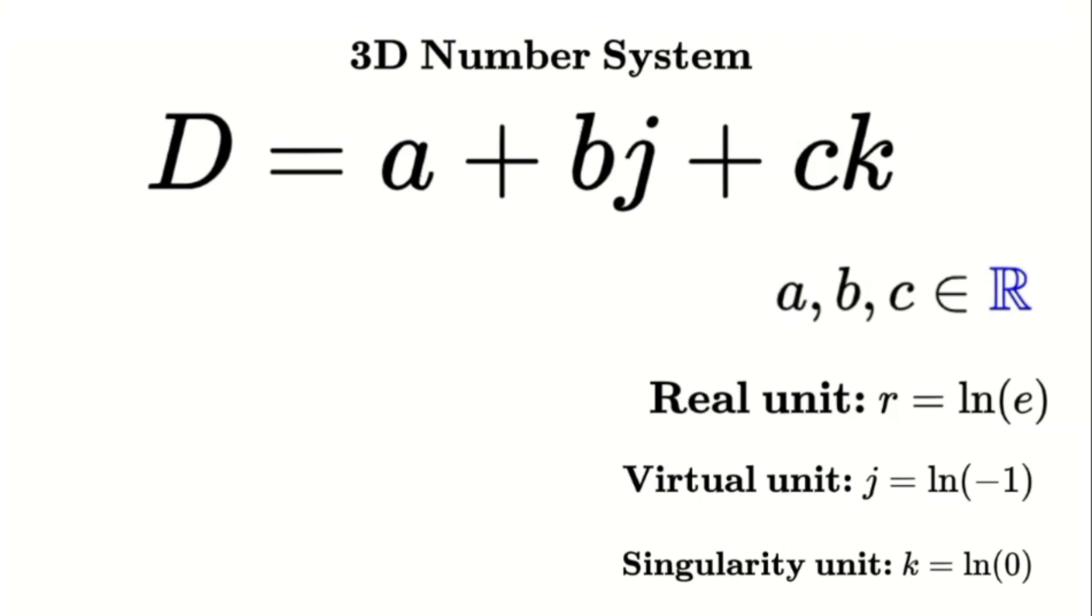Now, instead of trying to force singularities into the mold of fractions, we're going to define them as fundamental unit numbers. This shift in perspective leads to some interesting consequences. Firstly, our unit k is fundamentally linked to division by 0. We define it as k equals the natural logarithm of 0. This definition follows from the properties of logarithms. Traditionally, the logarithm of 0 is considered undefined. However, in our new system, we're not treating it as an error. Instead, we are defining it as a brand new number, our fundamental singularity unit, k.